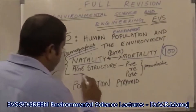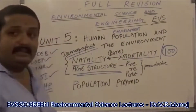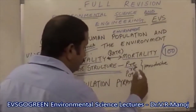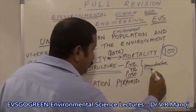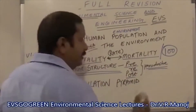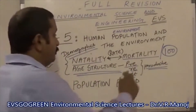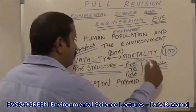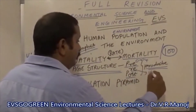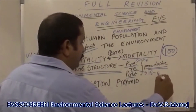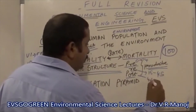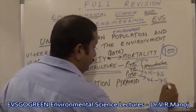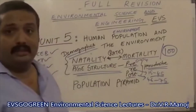You need to remember what is called the age structure. The easiest way to remember is Pre, Re, and Post Productive — these are the three age groups. Pre-productive age group is 0 to 14, reproductive is from 15 to 45, and post-productive is around 46 to 75.